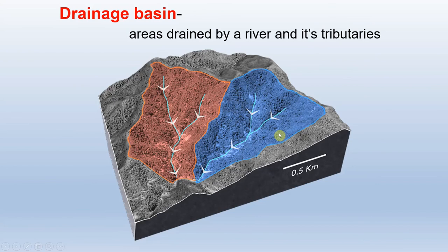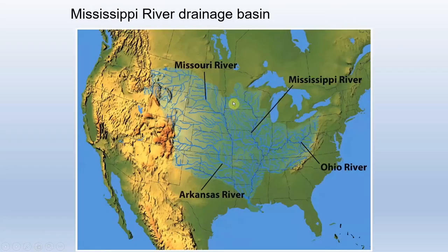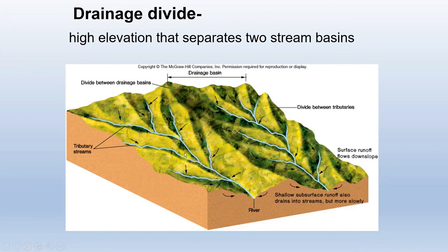A drainage basin is the area drained by a river and its tributaries — completely interchangeable with the term 'watershed.' A drop of water in one defined area all becomes part of one stream's drainage basin, and this works both above and below ground with groundwater. A drainage divide is the topographic high point separating two drainage basins — land on one side feeds one basin, land on the other side feeds another.